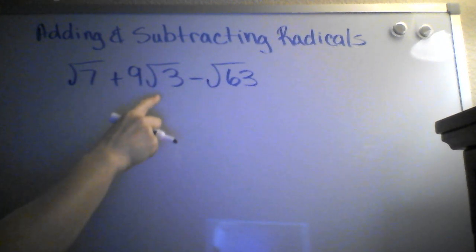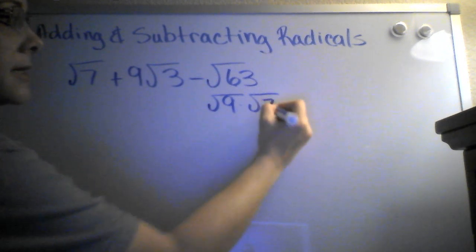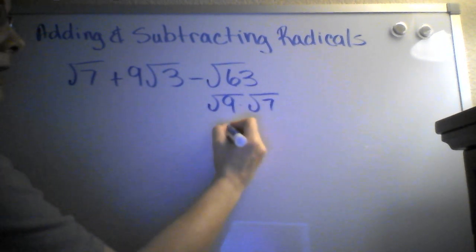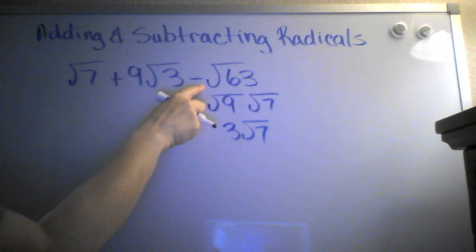So I want to simplify it. It can be broken into the square root of 9 times the square root of 7. The square root of 9 is 3 radical 7. And there's an understood 1 here, so I don't have to do anything with that. So that's minus 3 radical 7.